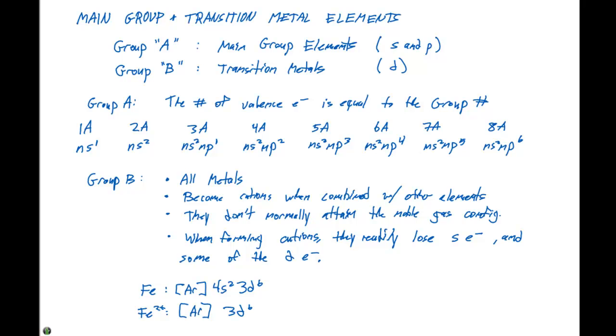Note that iron 2 plus is not 4S2, 3D4, it's 3D6. If we look at iron 3 plus, it's gonna have an electron configuration of argon, 3D5. So when forming cations, they readily lose the S electrons and some of the D electrons.